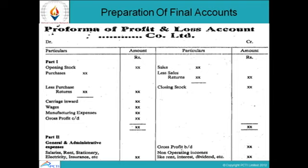Proforma of Profit and Loss Account — Part 1 (Trading Account): The debit side includes opening stock, purchases less purchase returns, carriage inward, wages, and manufacturing expenses. The credit side includes sales less sales returns and closing stock. The credit side total minus the debit side total gives the gross profit, which is then transferred to the credit side of Part 2 of the P&L account.